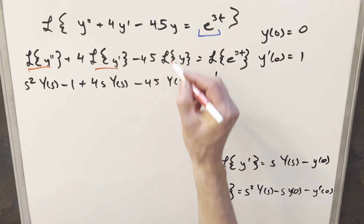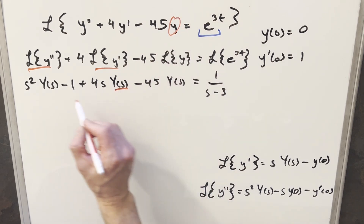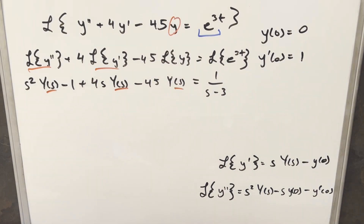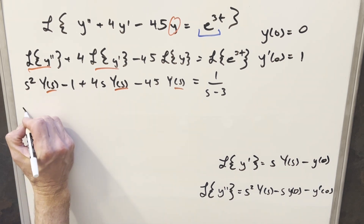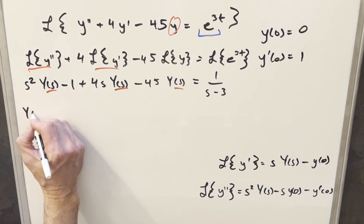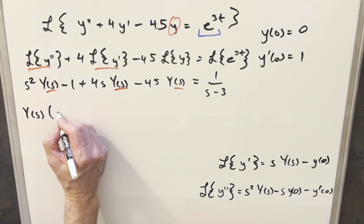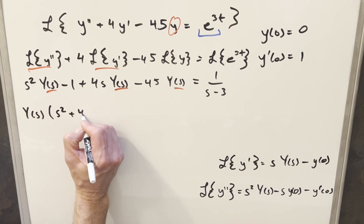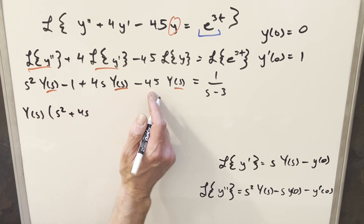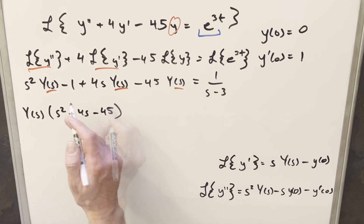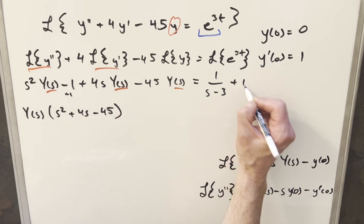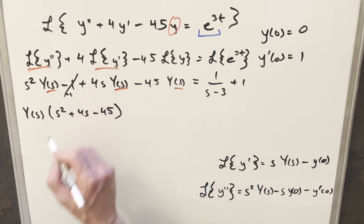Now in order to isolate Y, we're going to factor out the big Y(s) to set up an inverse Laplace transform. Factoring out Y(s) from all terms, we get Y(s) times the quantity s squared plus 4s minus 45. And for the minus 1 term, I'll add a plus 1 on both sides so that goes away.